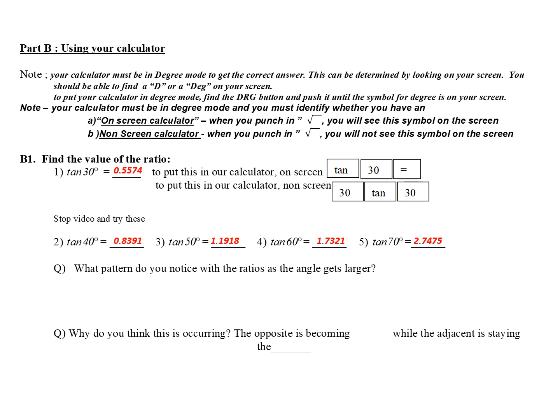Here's the results you should have gotten. Now what pattern do you notice with the ratios as the angles get larger? Well, you should notice that as the angles get larger, the ratios become larger. Now why do you think this is occurring? Well, start by drawing a triangle. Here is a triangle of 30 degrees, 40 degrees, 50 degrees. What do I notice? The opposite is getting bigger while the adjacent is staying the same.